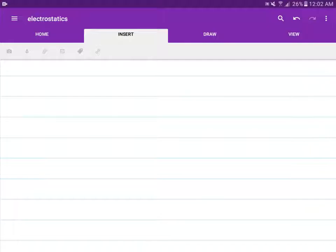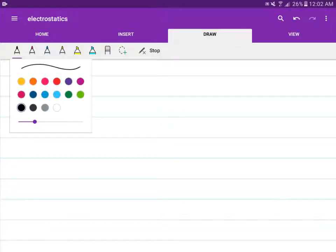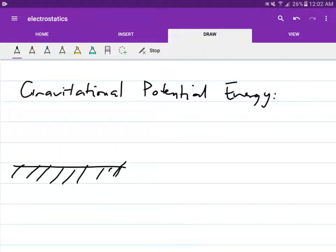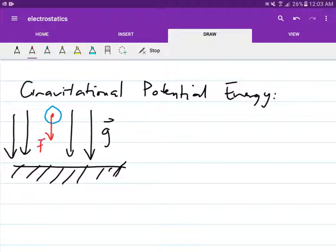Before we start with electric potential energy, let's briefly recall the gravitational potential energy. So, you have a ground here, and say you have a ball here. You know that the gravitational force or the gravitational field G is pointing downwards.